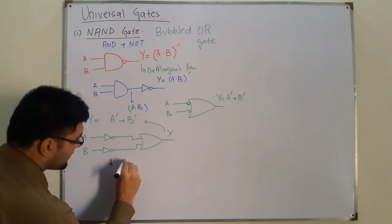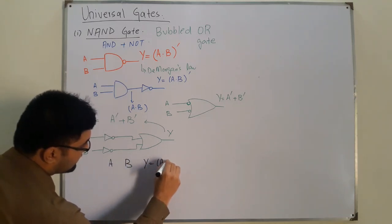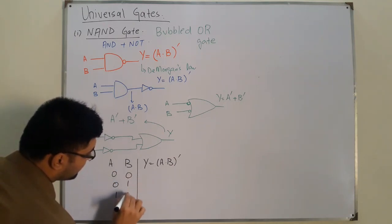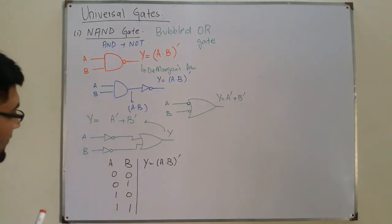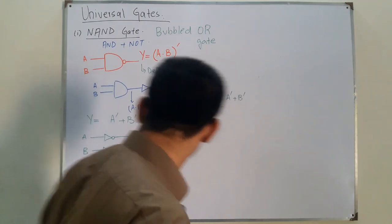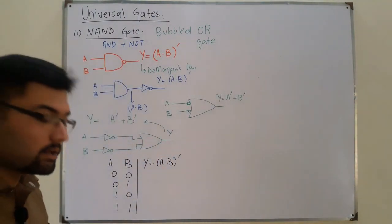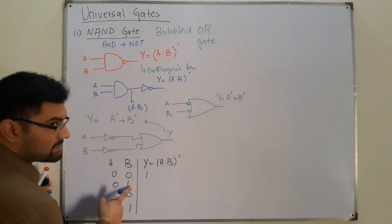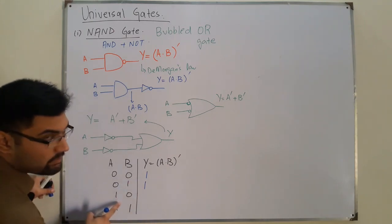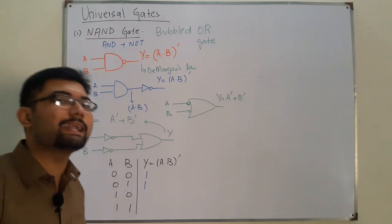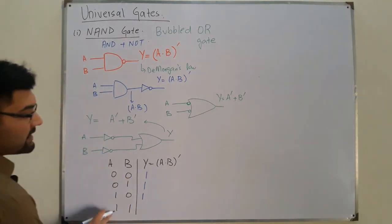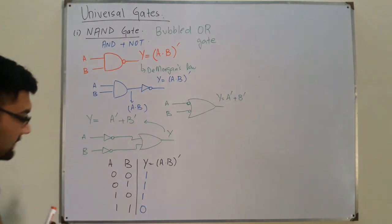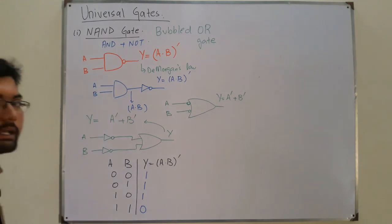Now the truth table for the NAND gate: we have two inputs A and B, and the output is A AND B whole complement. The input combinations are 00, 01, 10, 11. Zero AND zero is zero, complement is one. Zero AND one is zero, complement is one. One AND zero is zero, complement is one. One AND one is one, complement is zero.